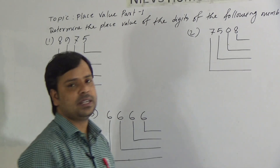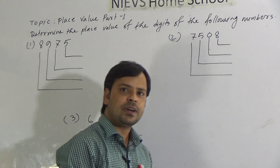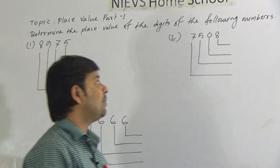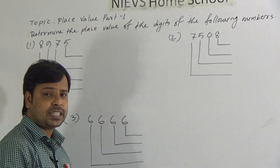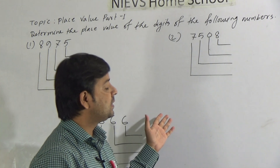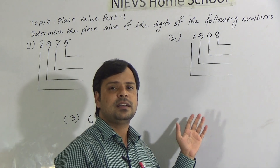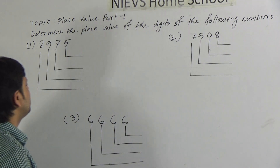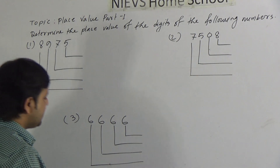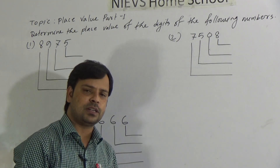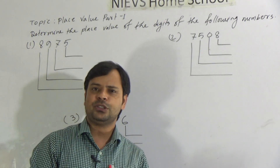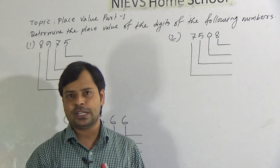As our today's topic is Place Value Part 1, in this part I will show you how you can determine the place value of the digits of a number. I have written three numbers here. In the half-yearly examination also, I have taken classes on this topic, so you can follow that class also to learn this. At first you have to know what is Place Value.